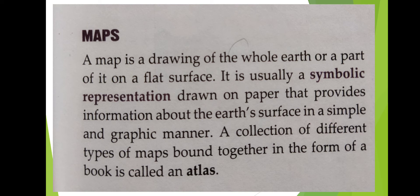It shows both natural and man-made features. Usually, maps are drawn to show features like political boundaries, population, climate, mountains, rivers, vegetation, roads, railways, minerals, industries, etc. Maps provide maximum information in a minimum space and thereby save hundreds of pages of a book. A collection of different types of maps bound together in the form of a book is called an atlas.